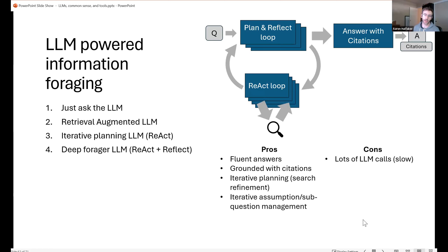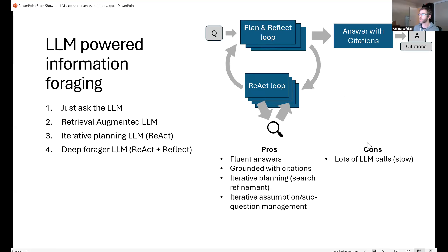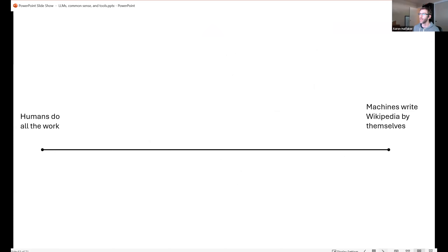The current state of Aaron's research combines iterative information gathering with information literacy processes — planning and reflecting on what information is being gathered. Much of his work focuses on getting a language model to surface its assumptions so it can check them with searches, and when it eventually produces an answer with citations, it has verified its assumptions along the way.